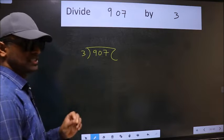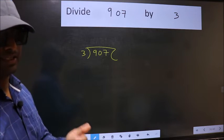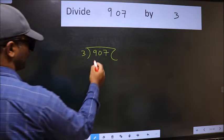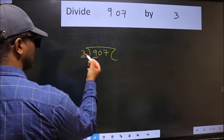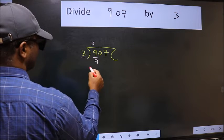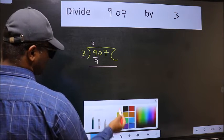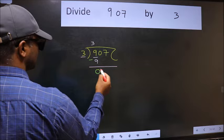This is step 1. Next. Here we have 9 and here 3. When do we get 9 in the 3 table? 3 times 3 is 9. Now we should subtract. We get 0.